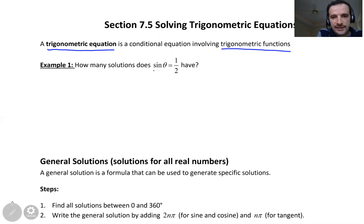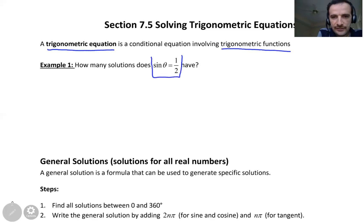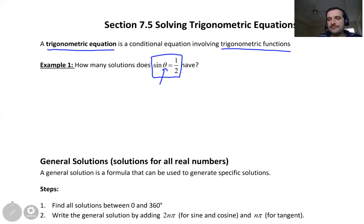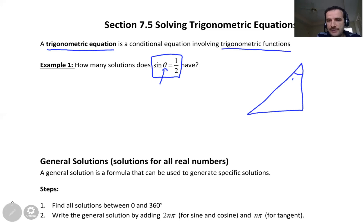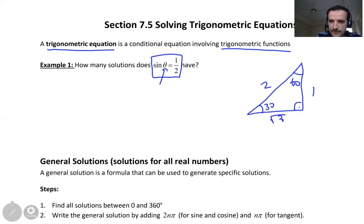Let's look at this example: how many solutions does sine theta equals one half have? This is our equation — sine theta is equal to one half — and we need to find theta. When we see that value, we quickly remember the special triangle: 30-60-90, with sides 1, 2, and root 3.